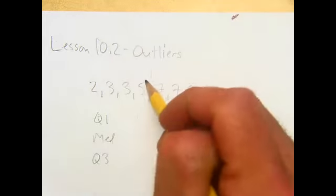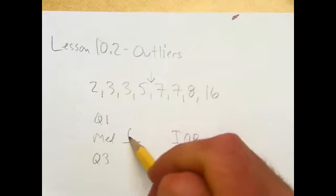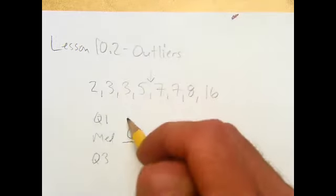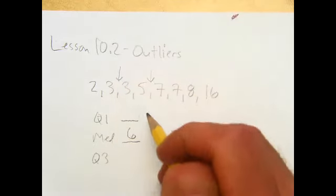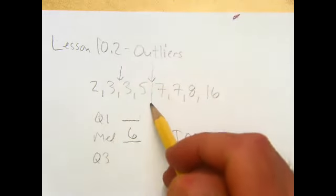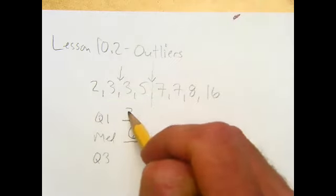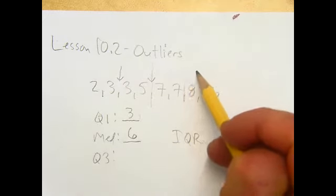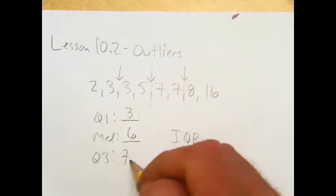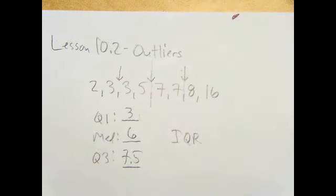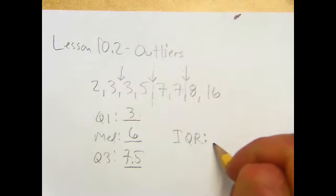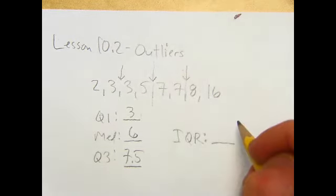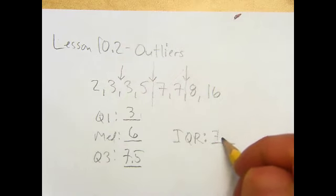Median looks like it's at six, right? The lower quartile or the first quartile is at three. Remember we just cut it here and just do the middle of these four. And the upper quartile or the third quartile looks like it's at seven and a half. IQR, do you remember what that is, Natalie? Remember that from yesterday? One and four and a half. Yeah, seven point five minus three. Four and a half.